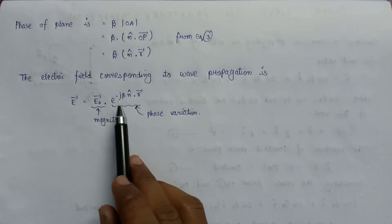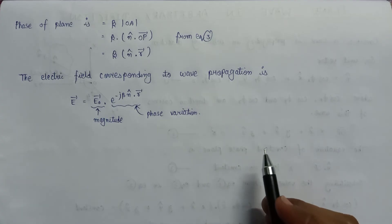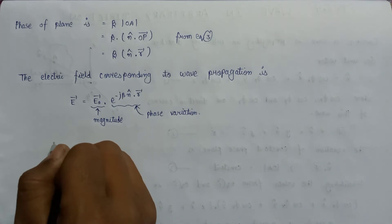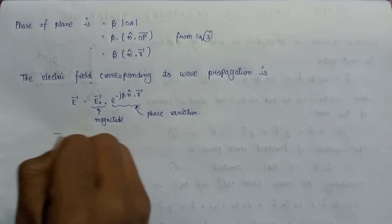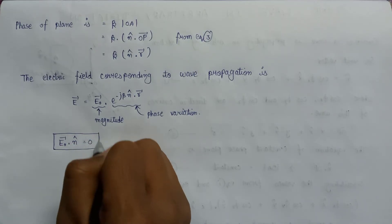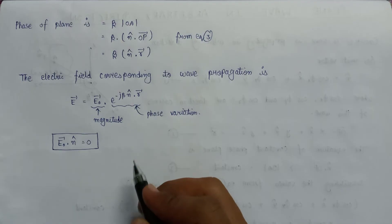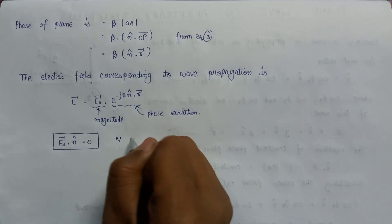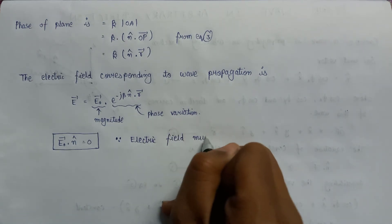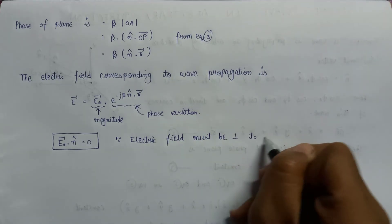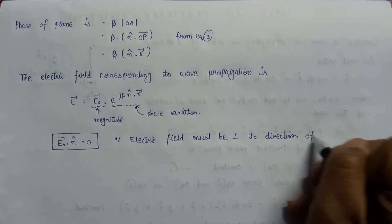This is the electric field corresponding to wave propagation. Since the electric field vector must be perpendicular to the direction of wave propagation, we can say that E0 vector dot n cap should be equal to zero. This is the condition: the electric field must be perpendicular to the direction of wave propagation.